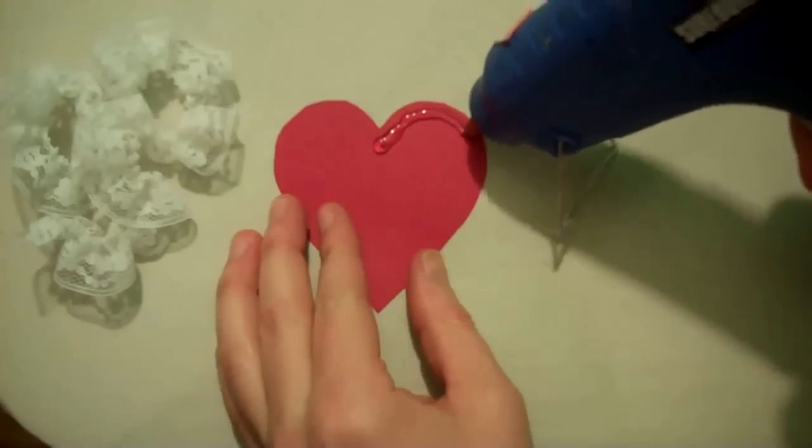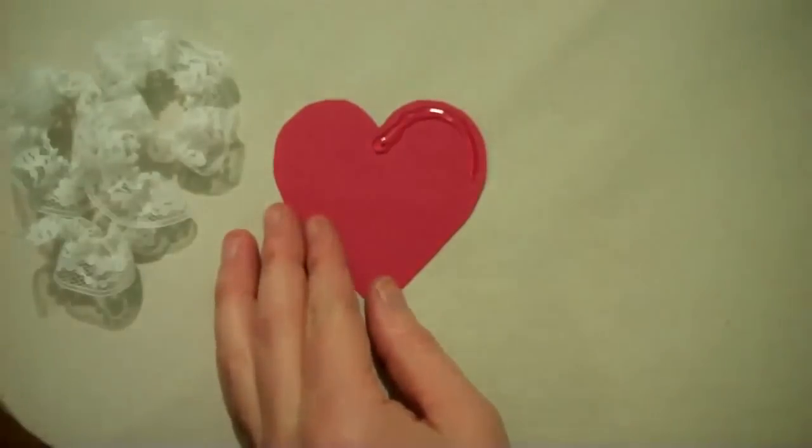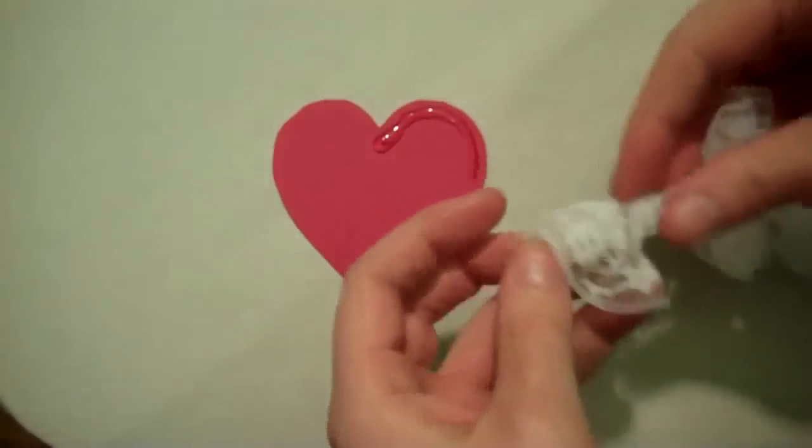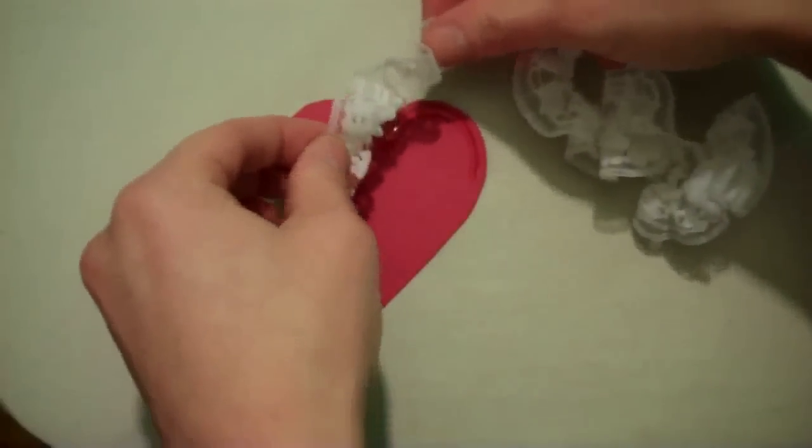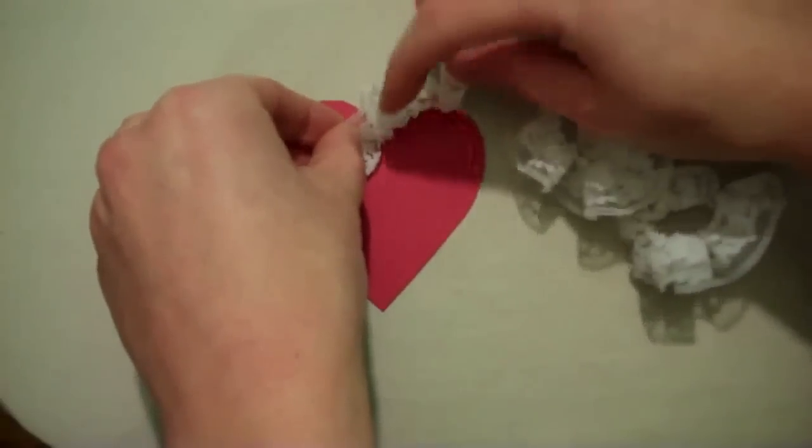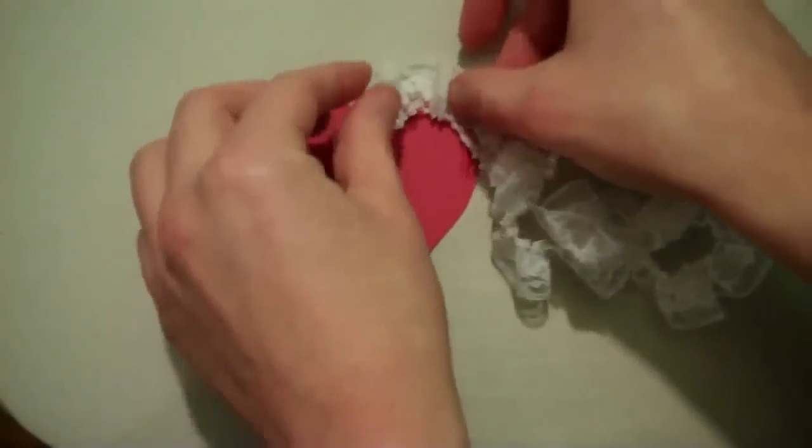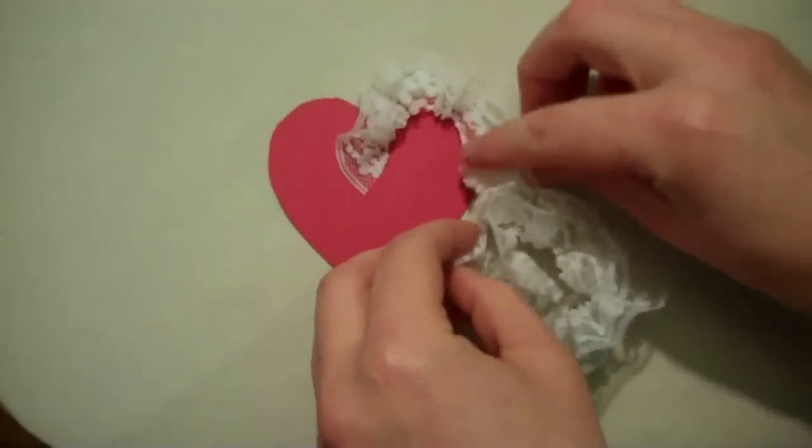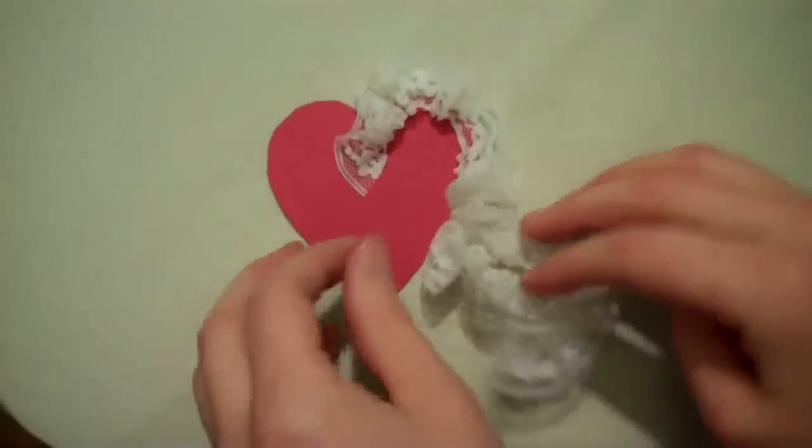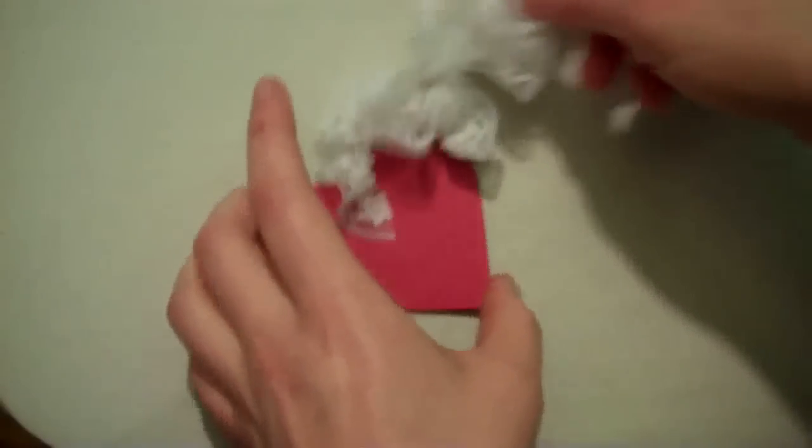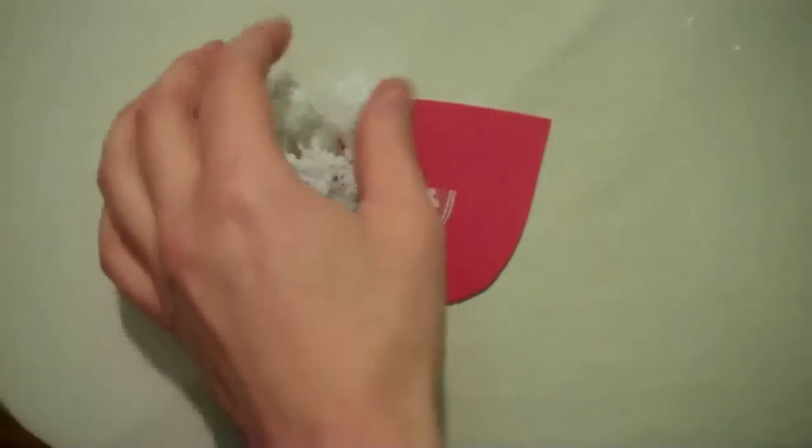Run a line of hot glue around the outside edge of one of your hearts. Then very carefully apply the scrunched edge of your seam binding to the glue, allowing the extra edge to extend beyond the edge of the cardstock heart. Continue that until you have lace around the entire heart.